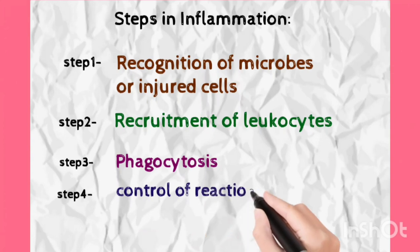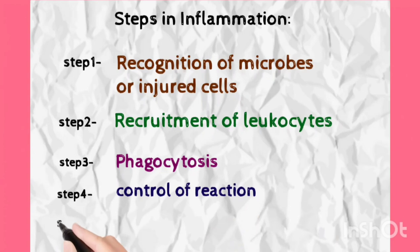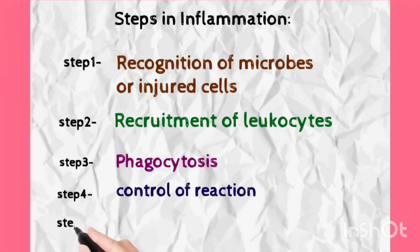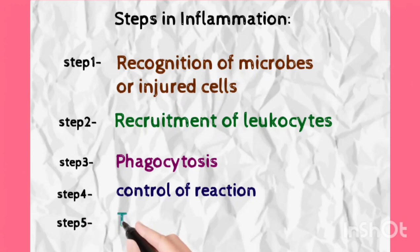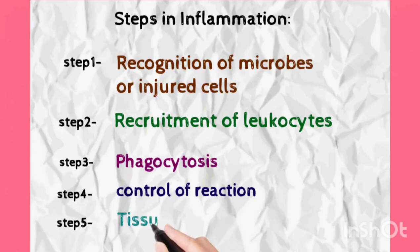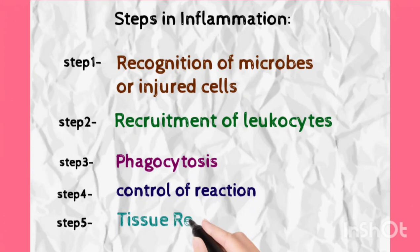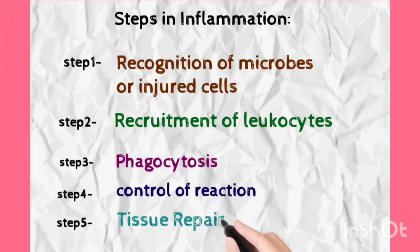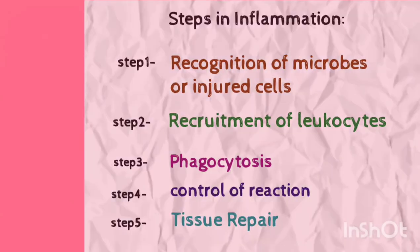The last step in inflammation is tissue repair. Just like soldiers get wounded during battle and are then taken care of afterwards, the damage caused during the inflammation process is repaired — this is called tissue repair. So we have roughly five steps: recognition, recruitment, phagocytosis, control of the reaction, and then tissue repair. Always remember the sequence.